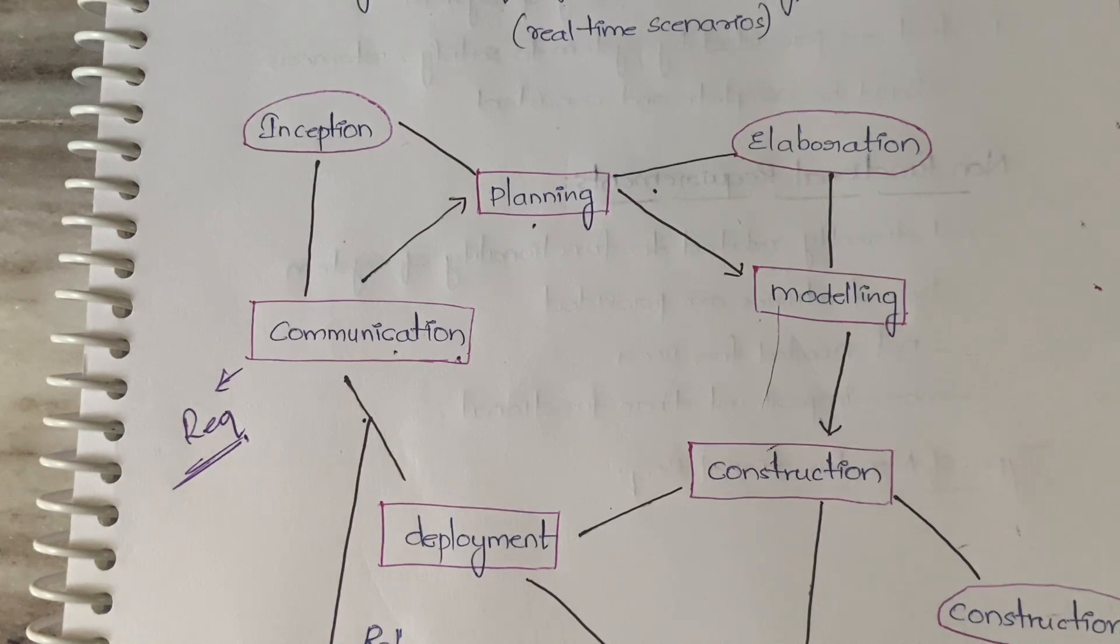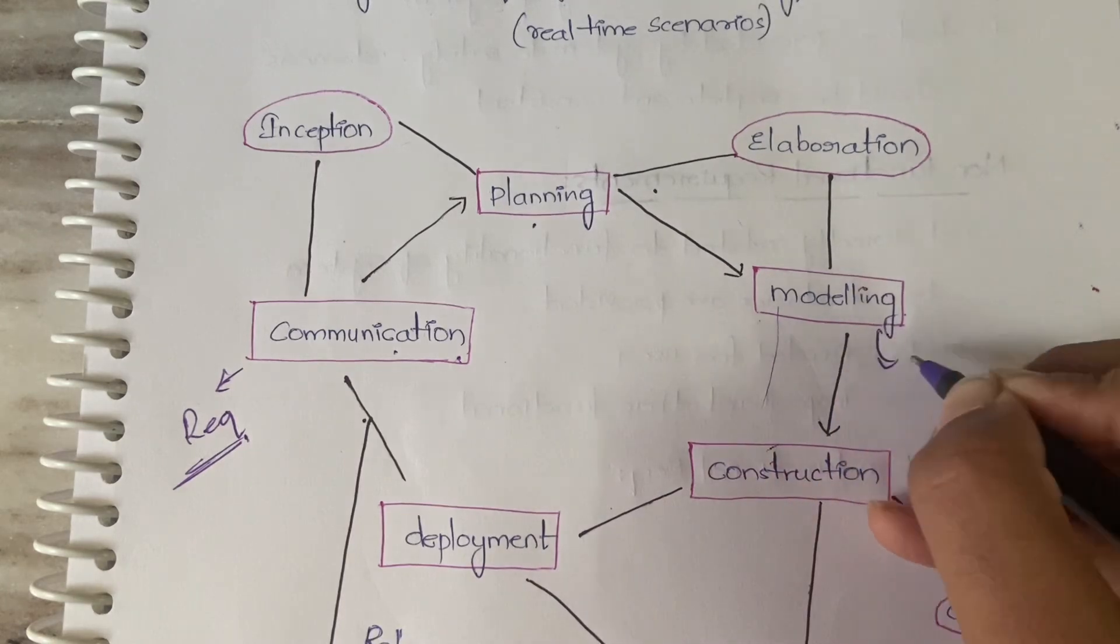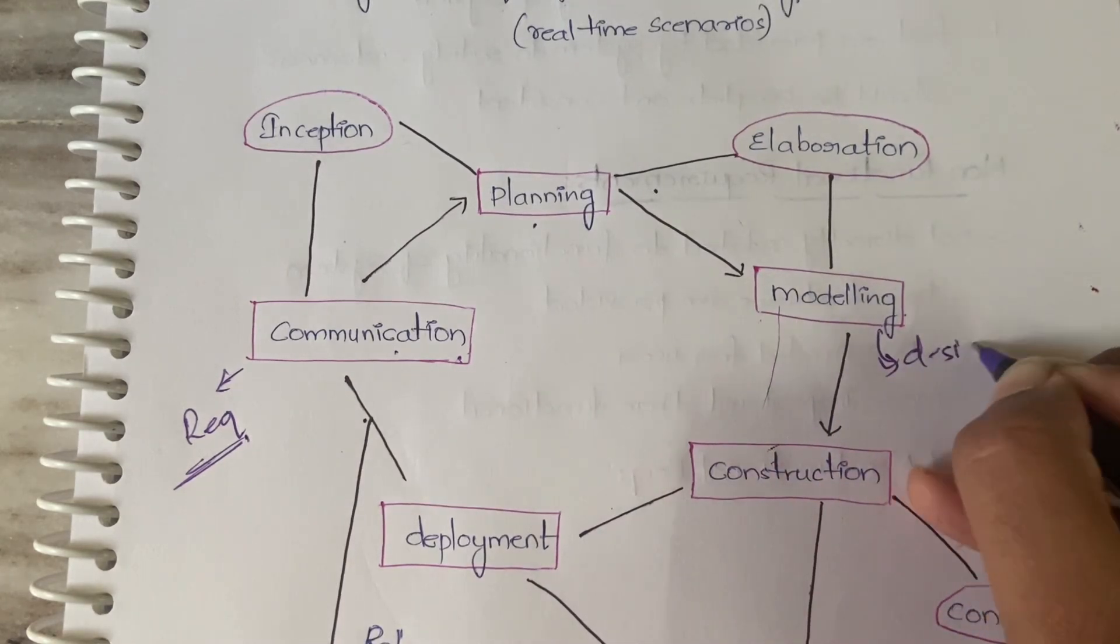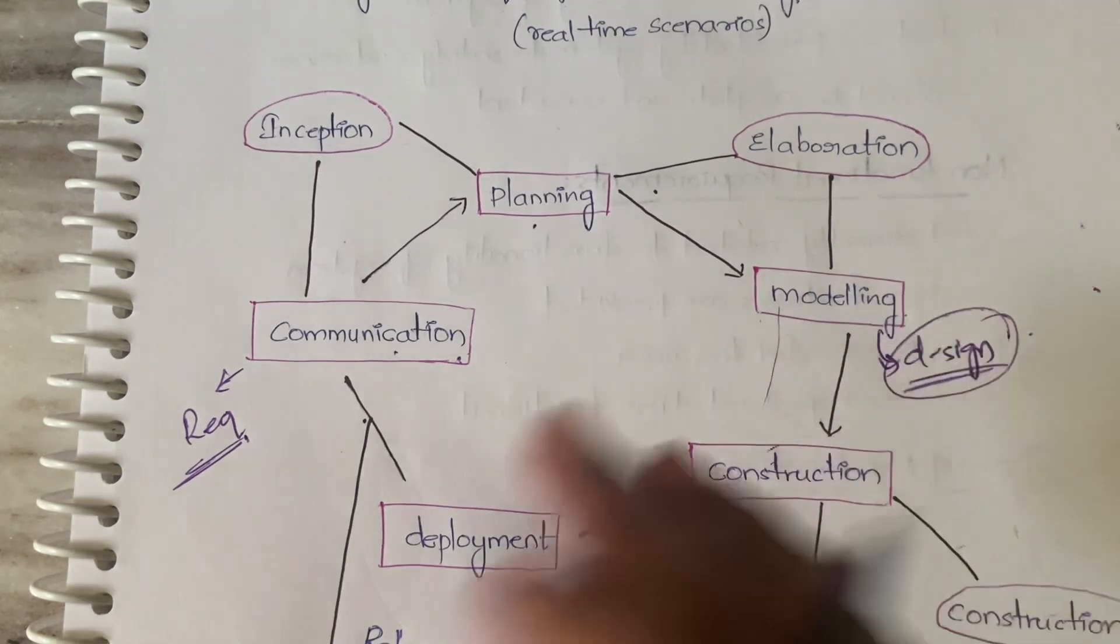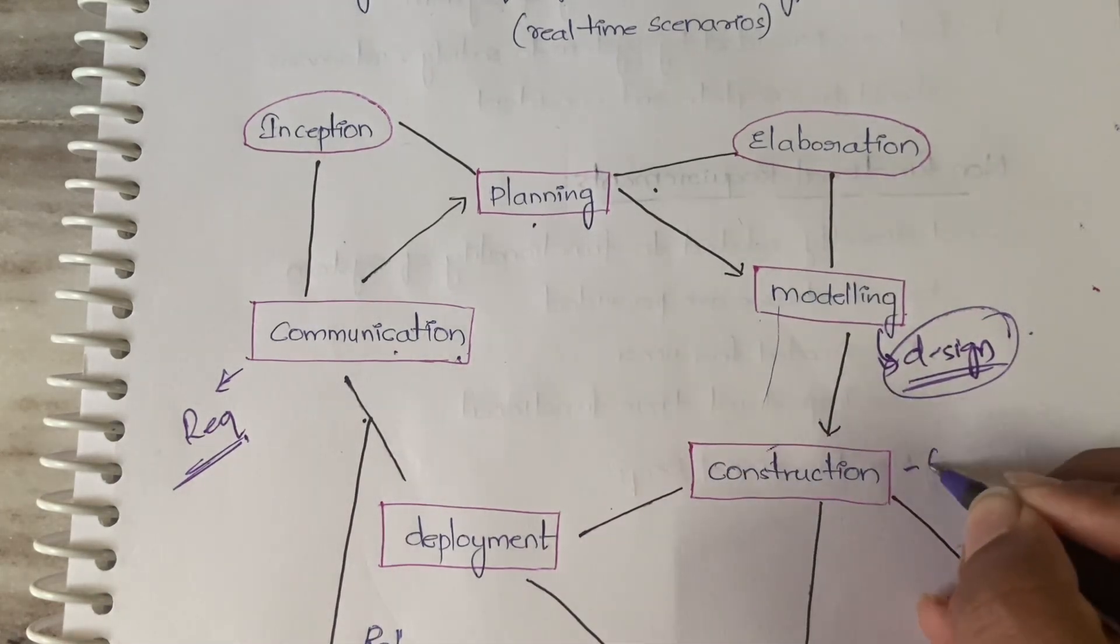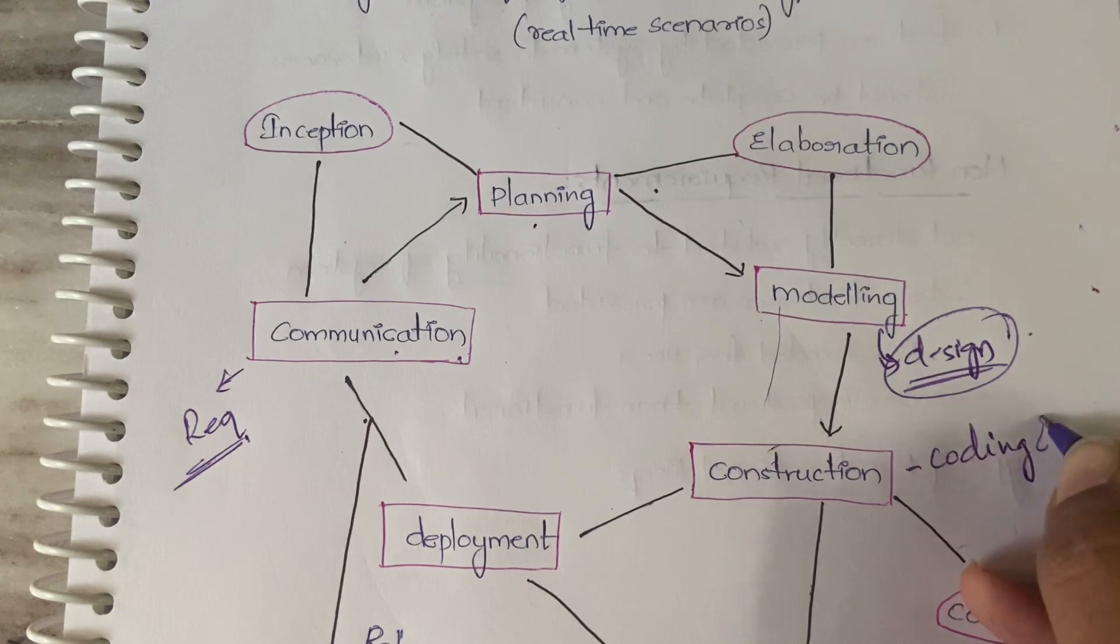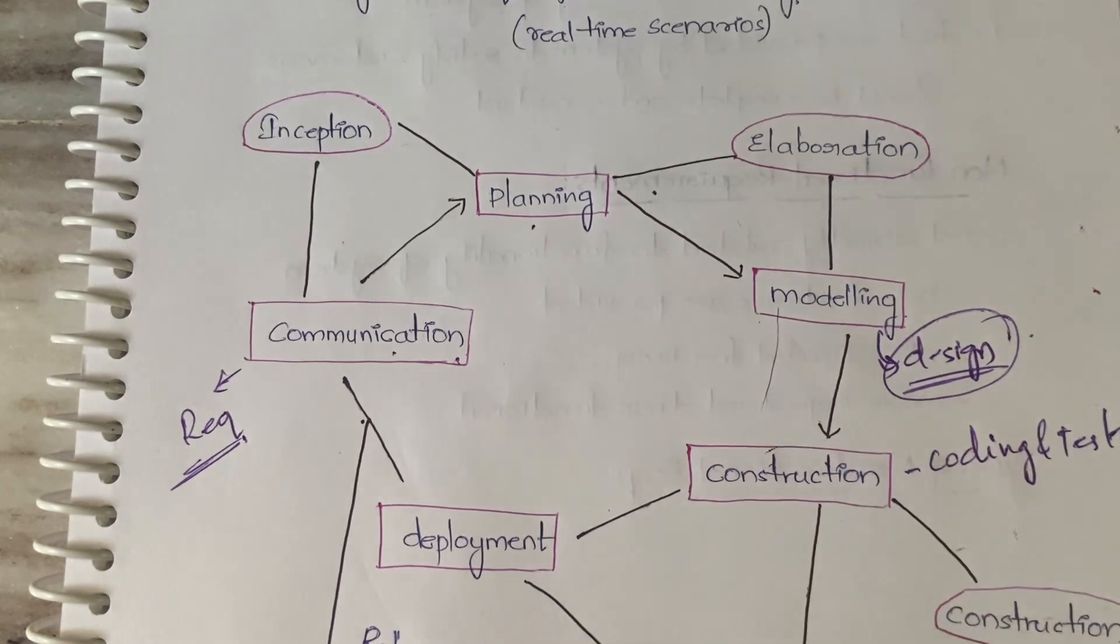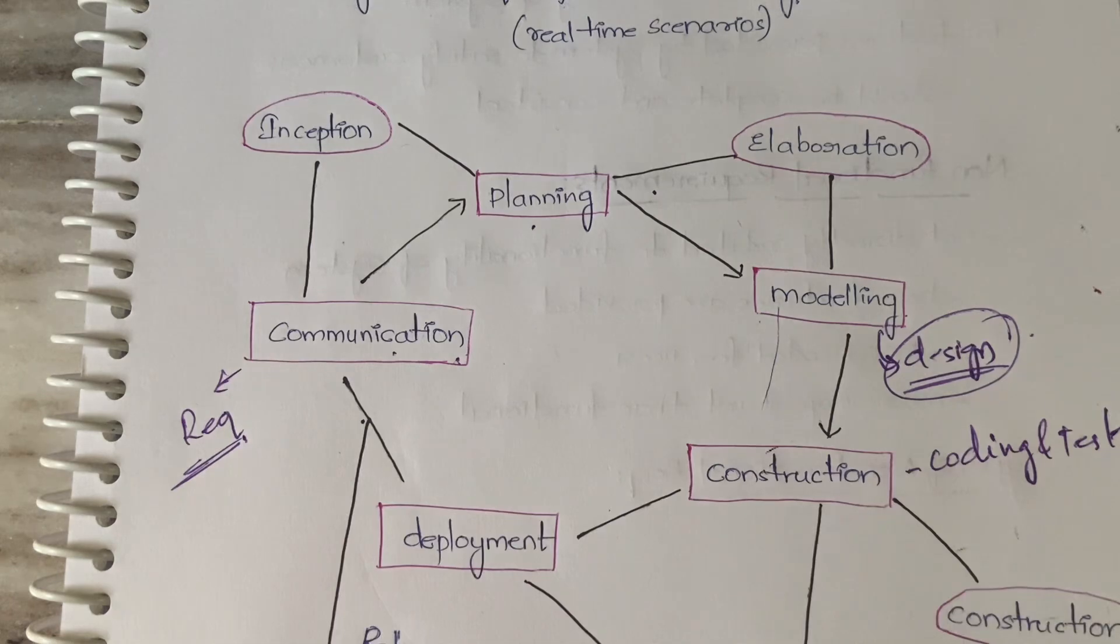Next comes modeling. Modeling is nothing but design - don't get confused. In our previous models, design is the same as modeling. Then you will come to construction - construction is nothing but coding and testing. Next you will come to deployment where you are delivering it to the customer. Deployment and maintenance both will come here.